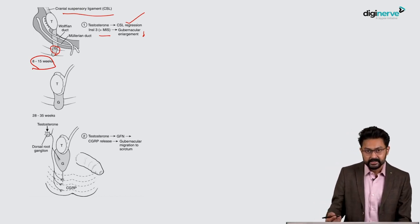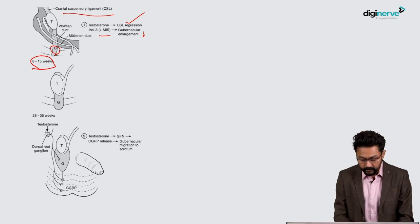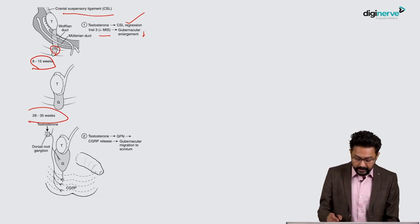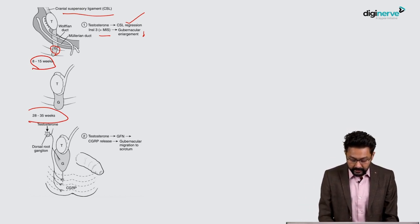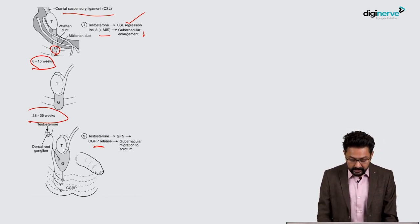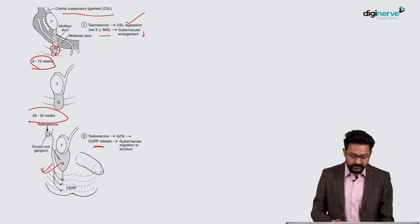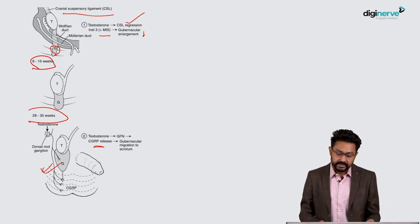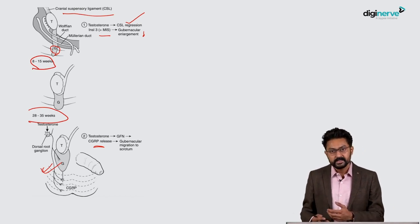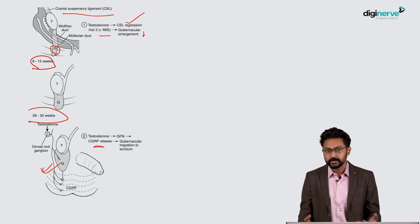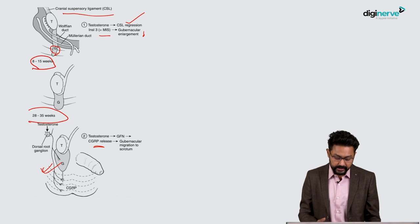The second half of testicular descent — from the groin into the scrotum — occurs later, around 28 to 35 weeks. Here the mechanism is different: testosterone stimulates a calcitonin gene-related peptide (CGRP), which stimulates the genital branch of the genitofemoral nerve, causing gubernacular contraction and testicular descent. This neurohormonal pathway is important, and failure of descent from groin to scrotum is often associated with neurohormonal problems.